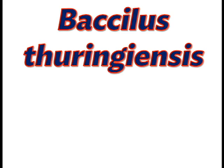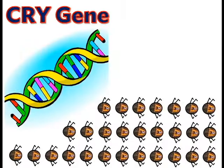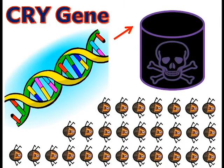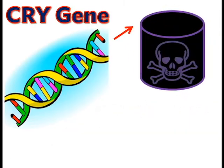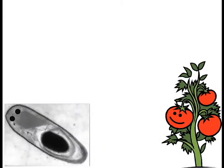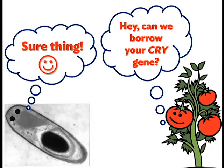Let's go back to our dilemma to see how this works. A certain species of bacteria known as Bacillus thuringiensis contains a gene known as the crygene, which codes for the production of toxic insecticides. So our goal now is to give the bacteria's crygene to the tomato plant.